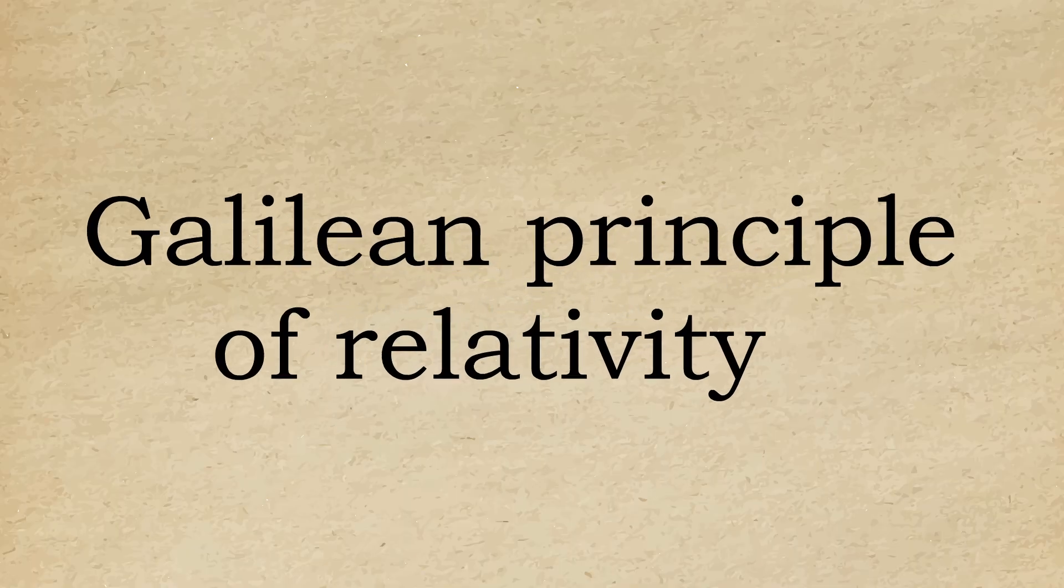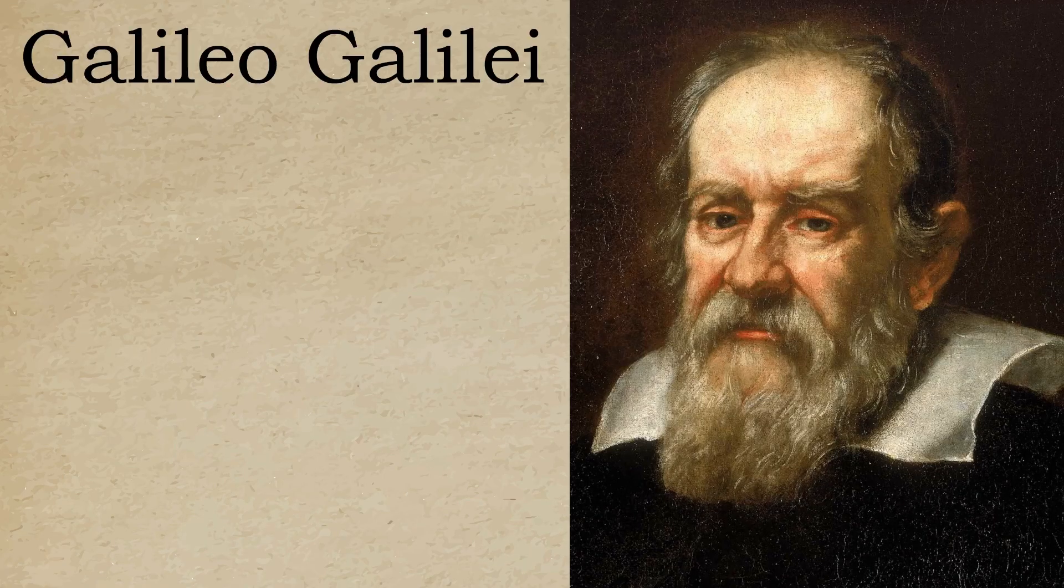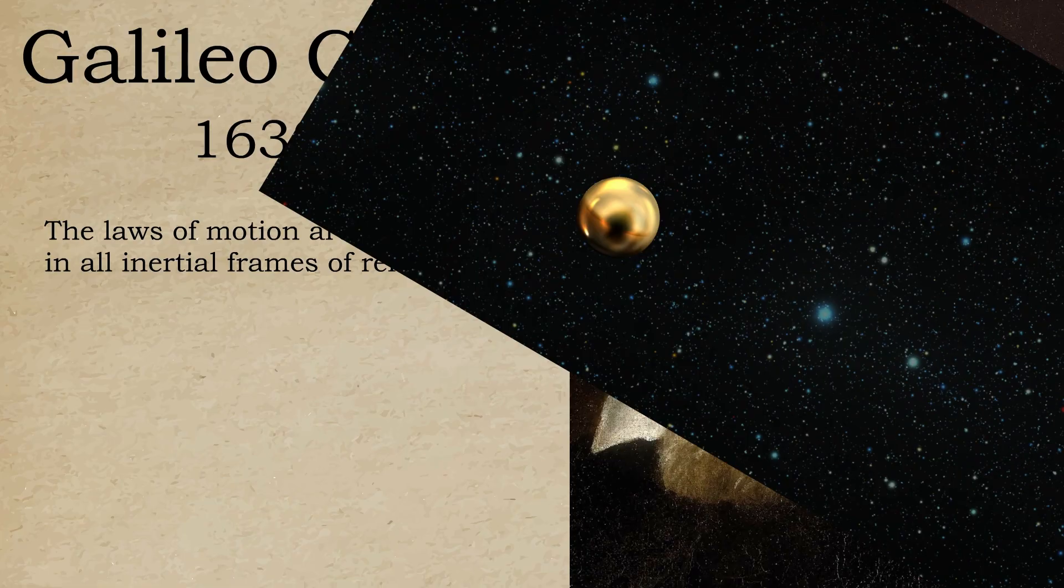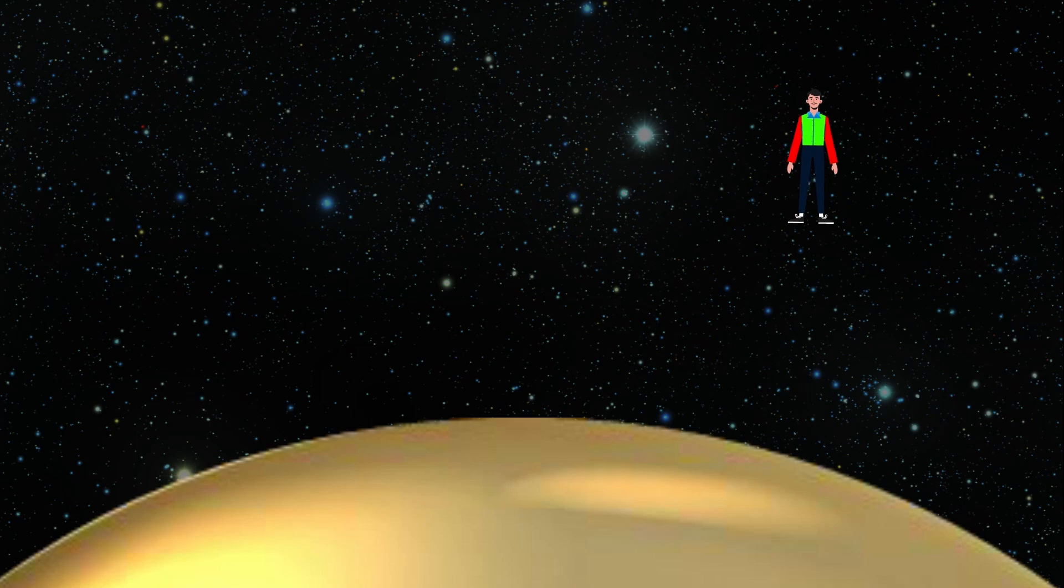To understand how exactly induction helped Einstein discover special theory of relativity, we need to recall something called Galilean principle of relativity. This principle was introduced by Galileo Galilei in 1632, and in simple words this principle says that there is no way to distinguish an absolute motion—so you can't know whether it is the ball in motion or you are in motion.